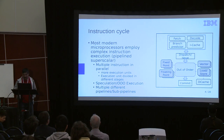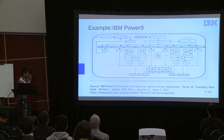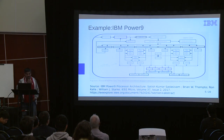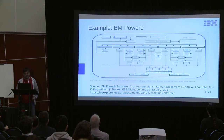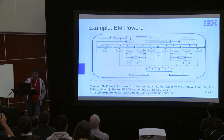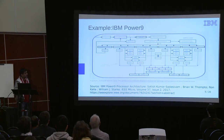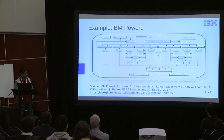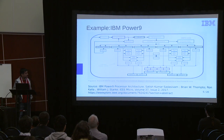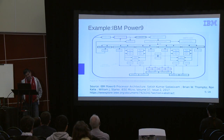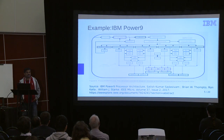This is a sample example of how the current Power9 generation works. You can see there is a branch slice which handles speculation and direction. It has multiple ALUs, does store forwarding, and all this sophistication lets us improve instruction throughput by reducing stall cycles so that application performance improves.